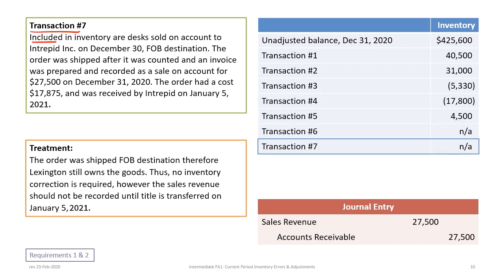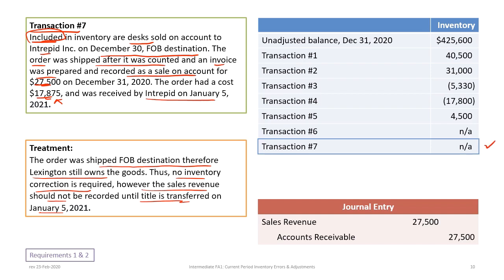Transaction seven: included in inventory are desks sold on account to a customer on December 30th, FOB destination. The order was shipped after the count and the invoice was prepared and recorded. The cost is $17,875. The order was received by the customer on January 5th. Since it's FOB destination, Lexington still owns the goods until delivery. No inventory adjustment is required, but sales should not be recorded until title transfers on January 5th. We debit sales and credit accounts receivable.